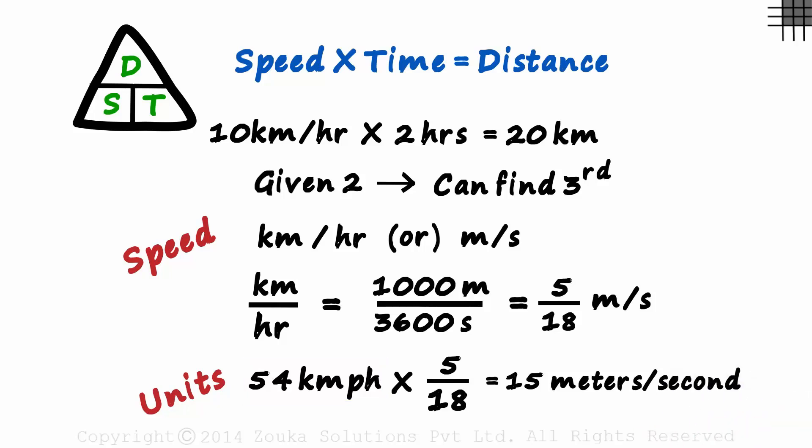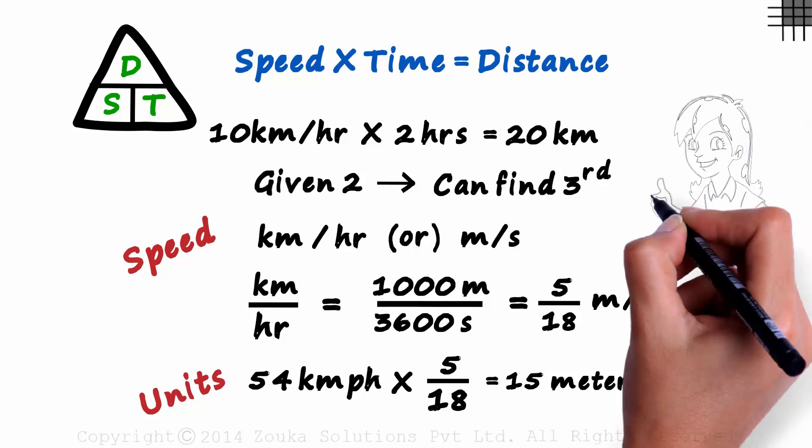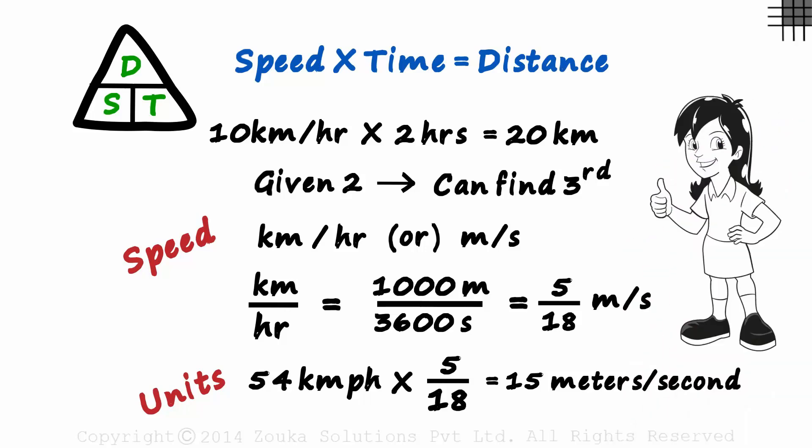And it goes without saying that to convert from meters per second to kilometers per hour, we have to multiply by 18 over 5. This topic is best understood with examples. We will cover more than 20 different types of examples in the coming sessions.